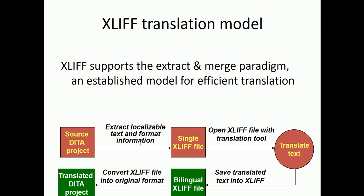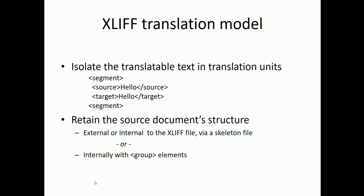This works because XLIF supports the extract-and-merge paradigm. We extract the localizable text and format information into a single XLIF file. The localization service provider opens it in their CAT tool, translates the text, and saves it. We convert the bilingual file back into its original format and have a translated DITA project. XLIF is so effective because it isolates translatable text into translation units with source and target, retaining the document structure in an internal or external skeleton file or with group elements.